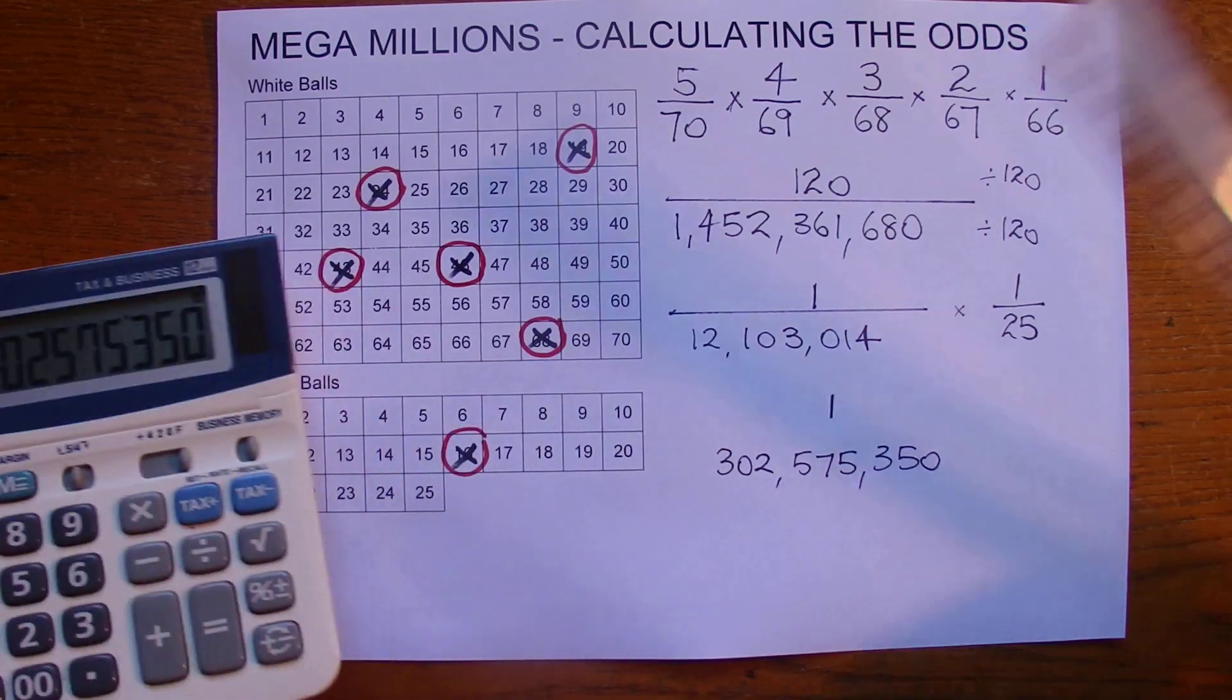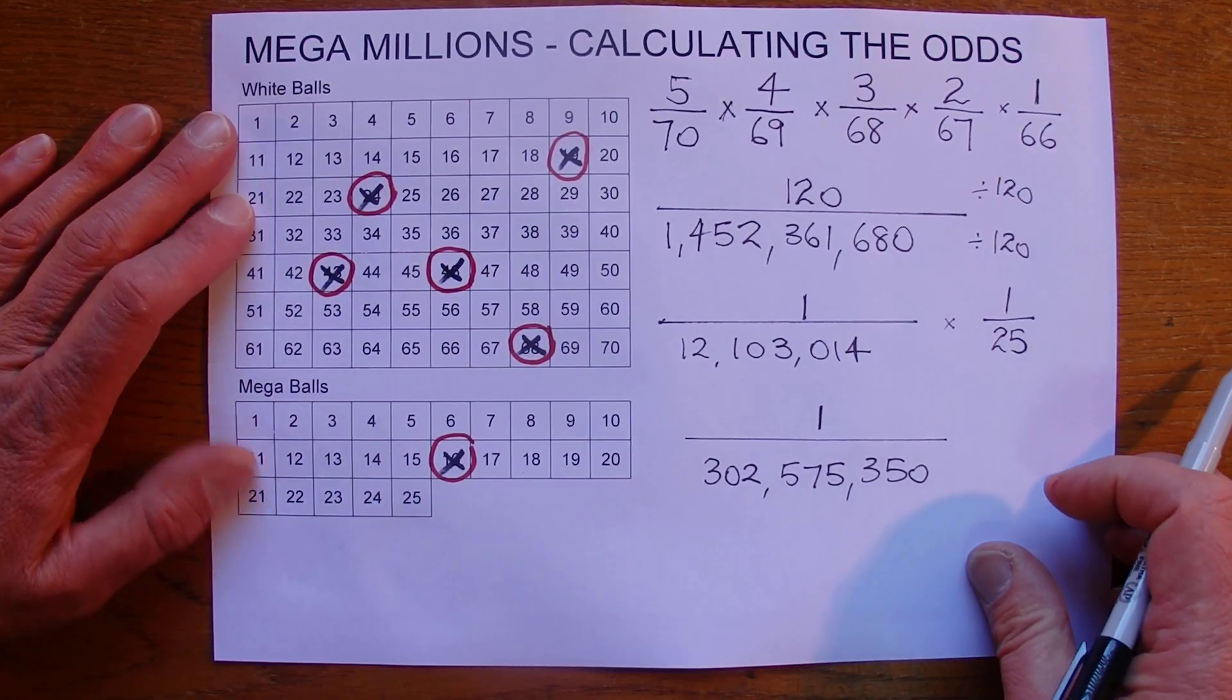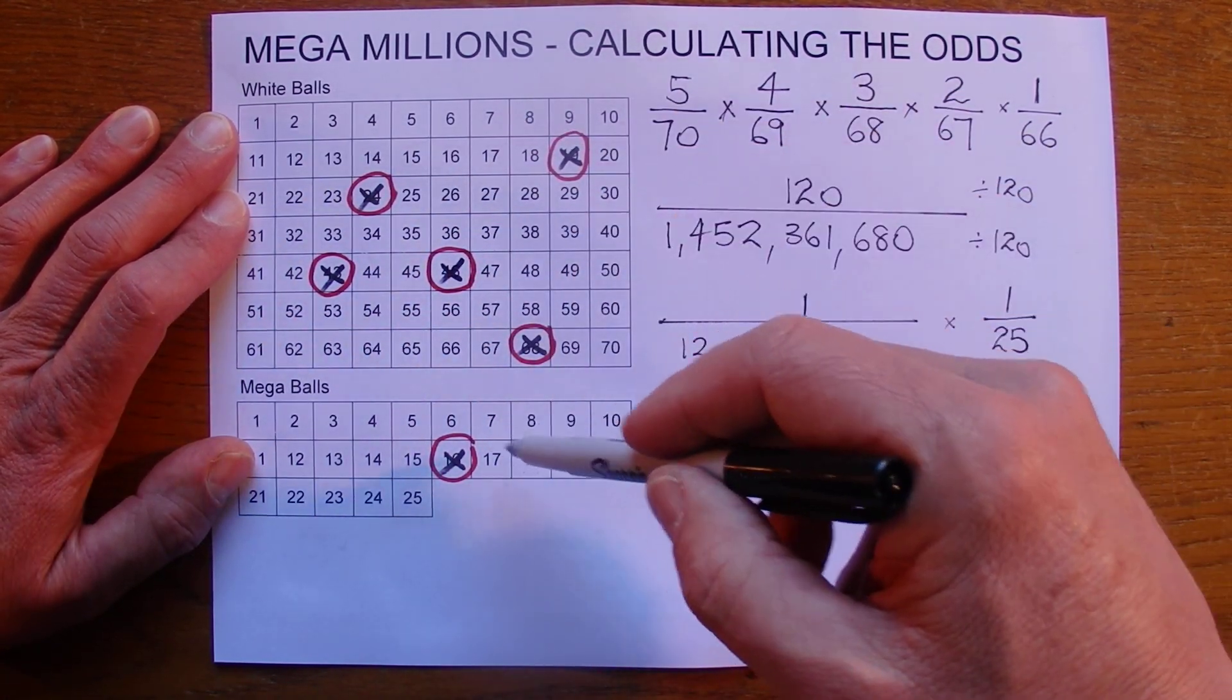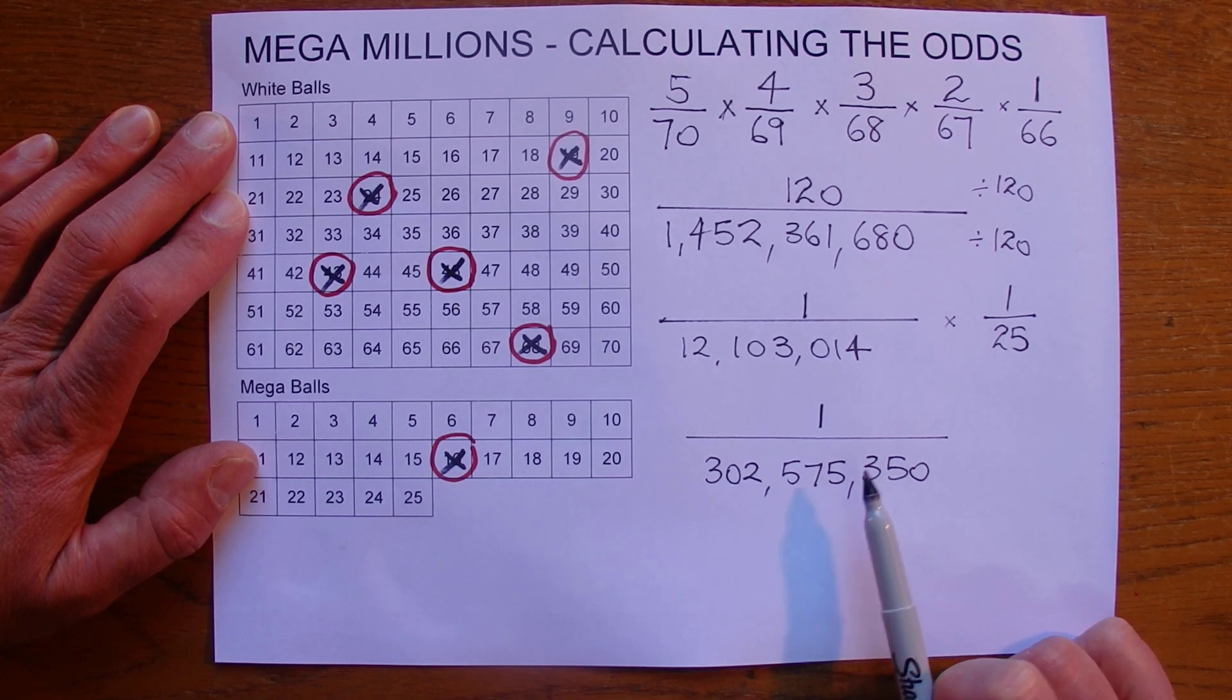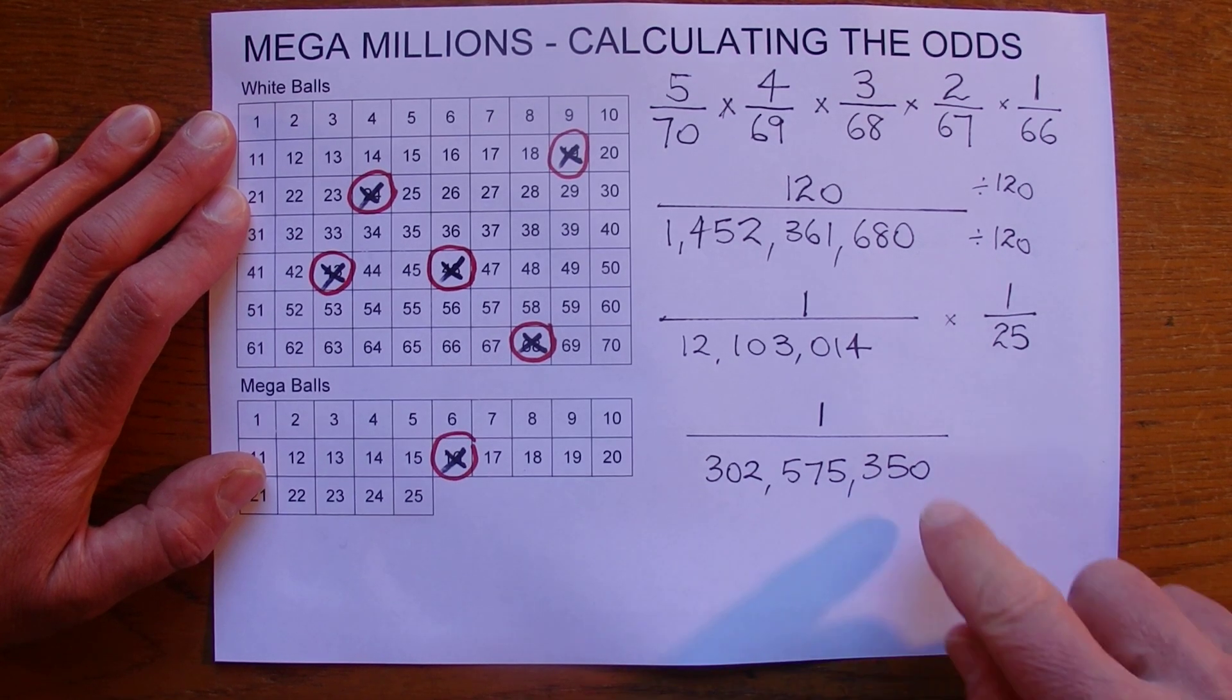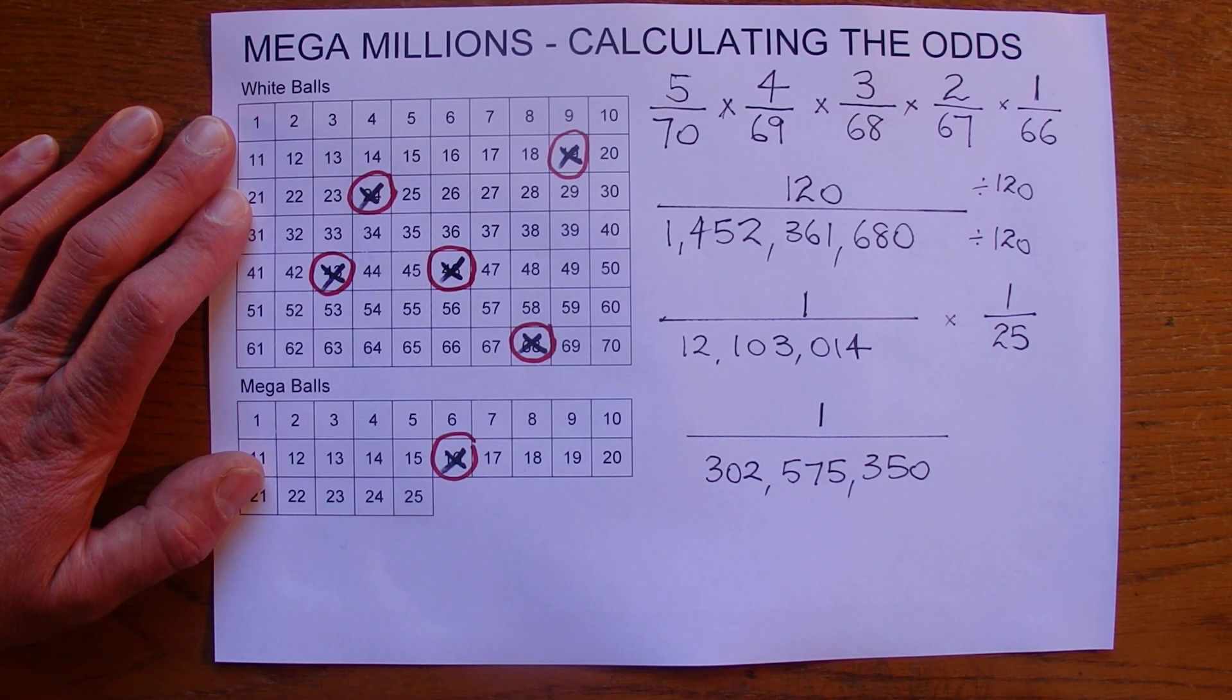There we go. The chances, this is just in one game of course, of correctly selecting five numbers out of 70 in the top section and one mega ball in the mega millions is one chance in 302,575,350. And if you look on the mega millions website, that's the figure that they show there for the odds. Well, I hope you've enjoyed this video. I hope you found it entertaining and interesting. Thanks for watching. Goodbye for now.